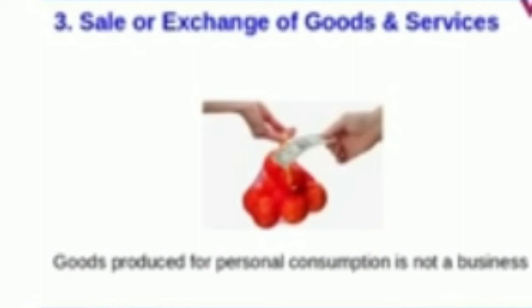Number three: There must be sale or exchange of goods and services. Goods used for personal consumption are not called a business activity. For example, cooking food at home for the family is not business, but cooking food and selling it to others in a restaurant is a business.